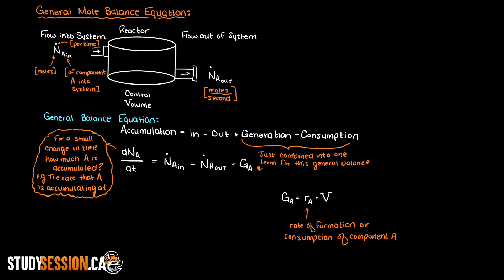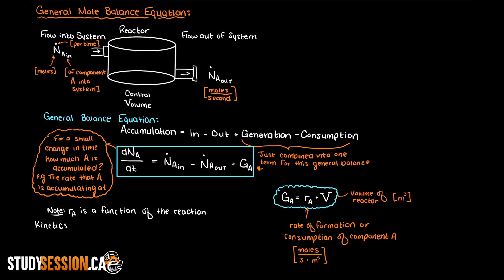This is because the units of our rate of formation is moles per time per volume. Multiplying by volume gives us the unit of moles per time, just like the mole flow rates earlier. Just as a note, this RA term is a function of the kinetics of the reaction and therefore will also be very important moving forward.